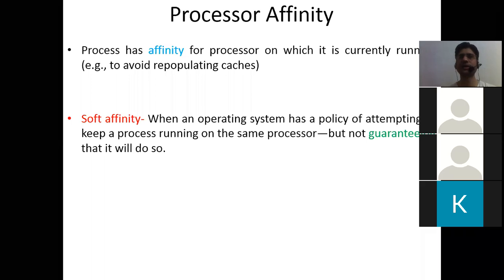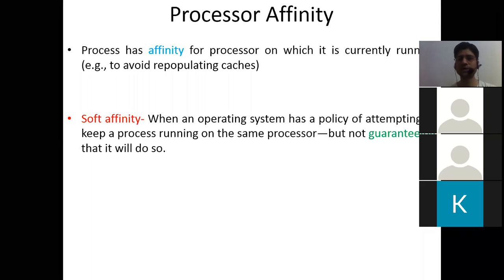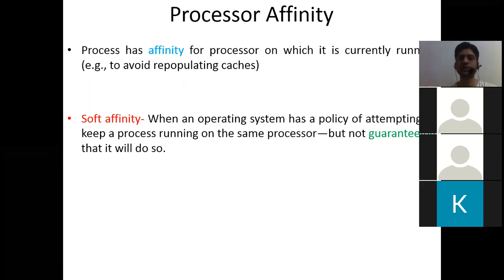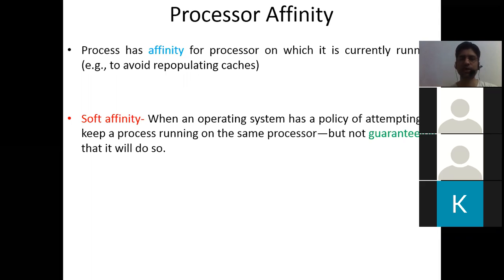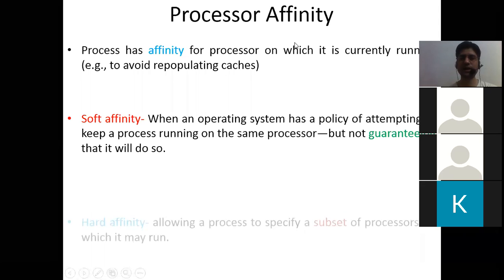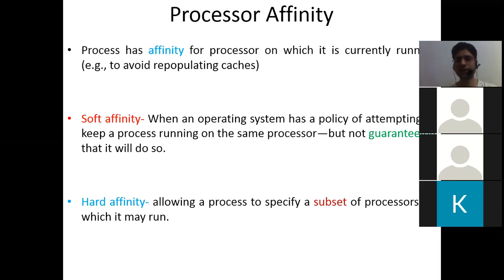For example, in round-robin or preemptive scheduling there is preemption. After preemption, the rest of the execution can continue on the same processor or may go to another processor since multiple processors are available. In soft affinity, the OS will try to assign the process to the same processor, but if it is heavily loaded, it can send it to another processor.